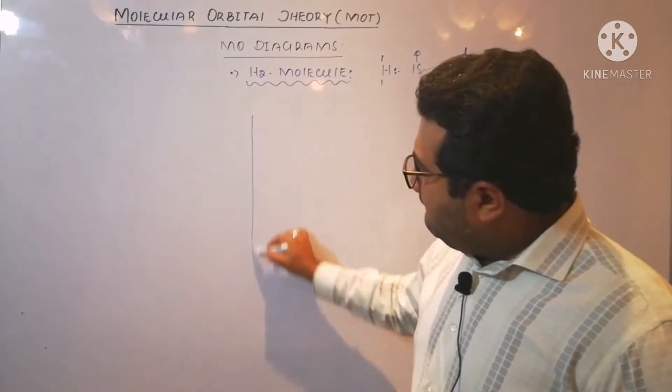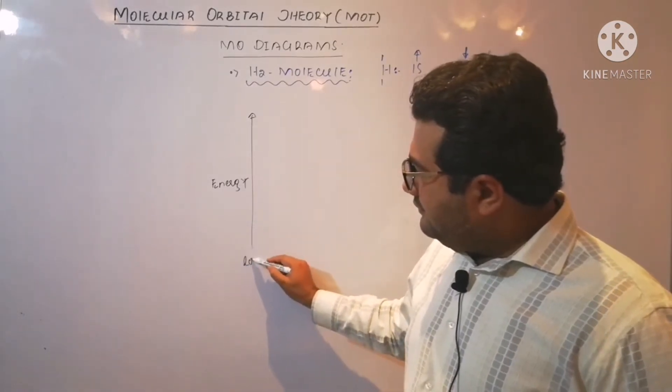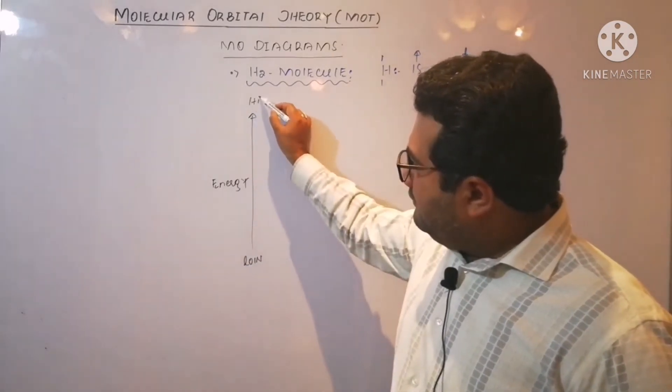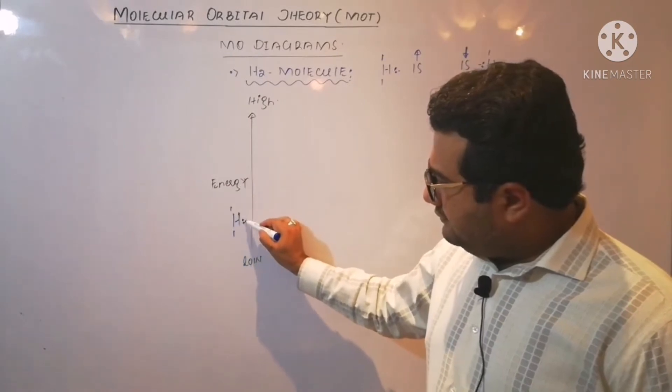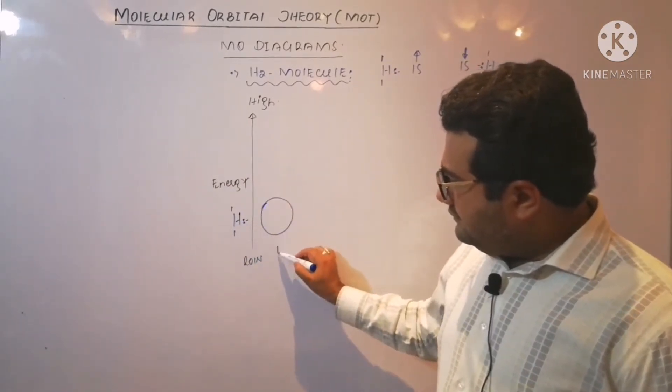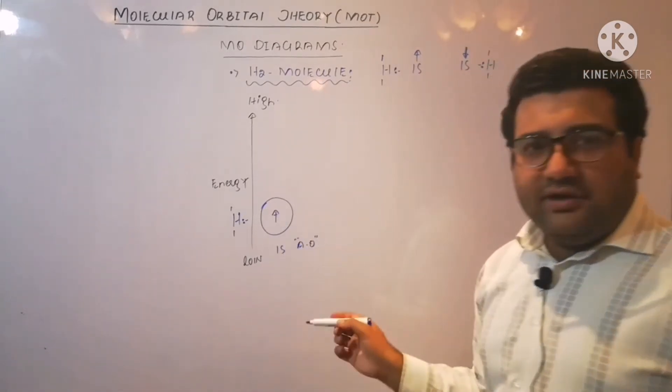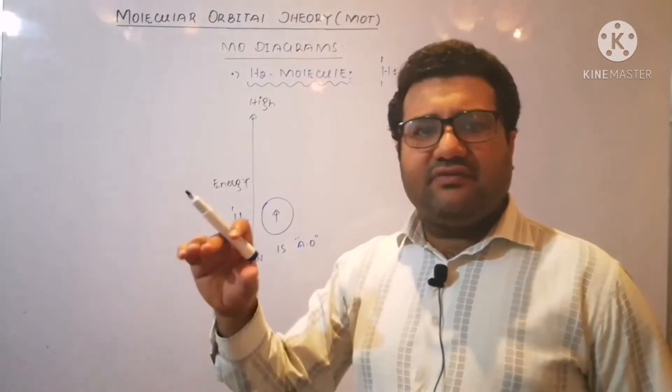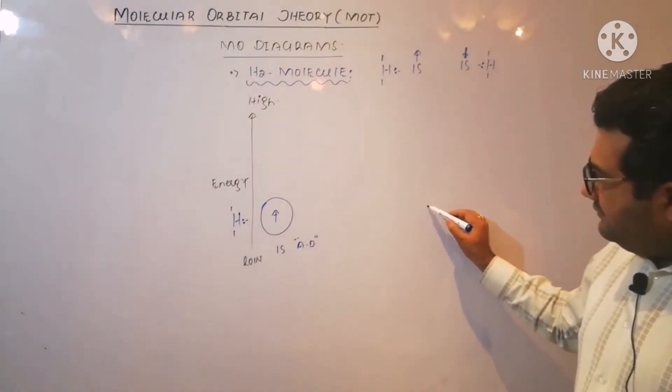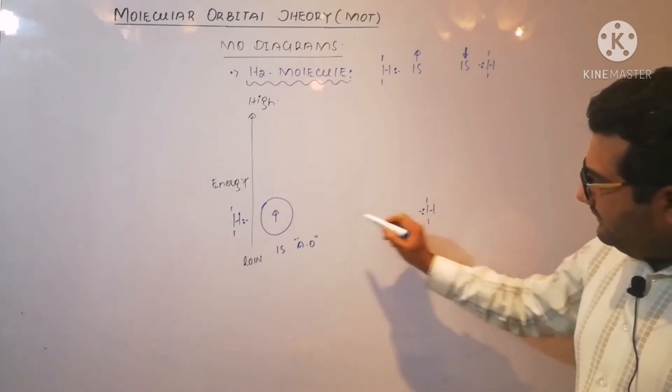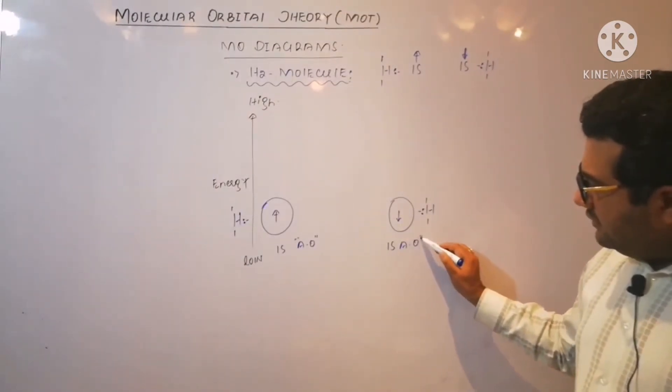Now here is the axis that shows increasing energy from bottom to top. Here is the hydrogen atom with its 1s1 atomic orbital. Now we will not show the shapes of the orbitals, we can show the orbitals in the form of boxes. Here will be the second hydrogen atom. You will keep them at equal position with respect to energy. That is also 1s atomic orbital.